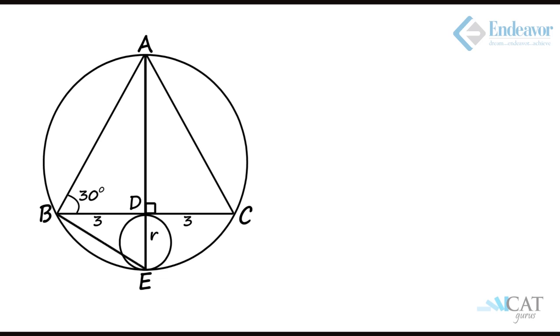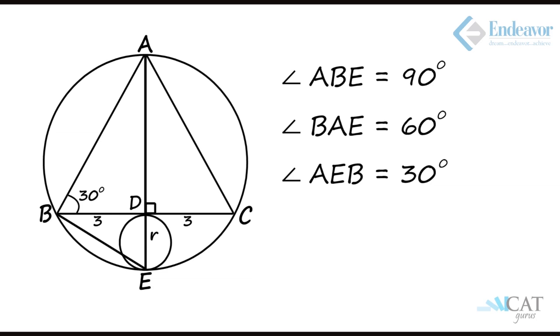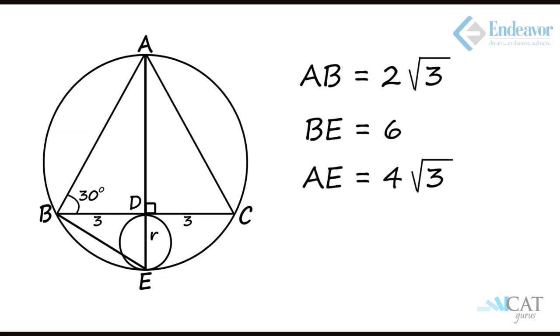Now, if we join B and E as shown in the diagram, we get right angle triangle ABE where AE, which is also the diameter of the circle, becomes the hypotenuse. As angle A was originally 120 degrees, angle ABE will be 90 degrees, angle ABE will be 60 degrees, and angle AEB will be 30 degrees. So the side opposite to 30 degrees is 2 root 3, side opposite to 60 degrees is 2 root 3 into root 3 that is 6, and side opposite to 90 degrees is 4 root 3. We get the diameter of the entire circle as 4 root 3, and side AD which is part of the same diameter is root 3.